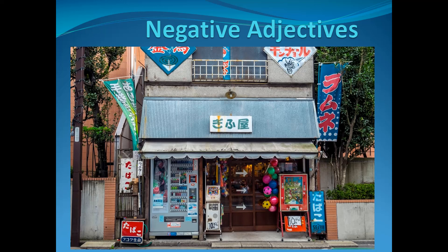As you can see, they have a little vending machine right at the front there. But wait, it says タバコ! Yes, they sell タバコ in vending machines, which is not good for Australian standards. And that's why we're going to learn negative adjectives.